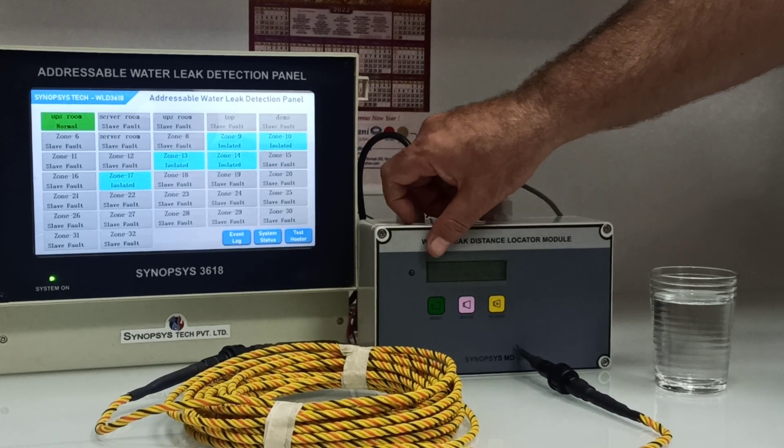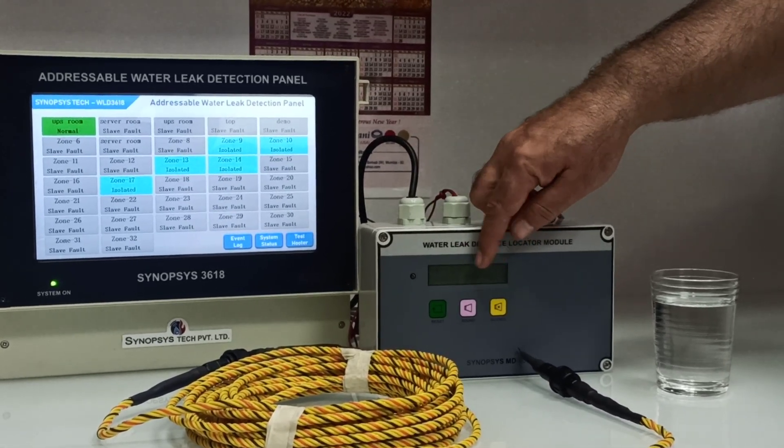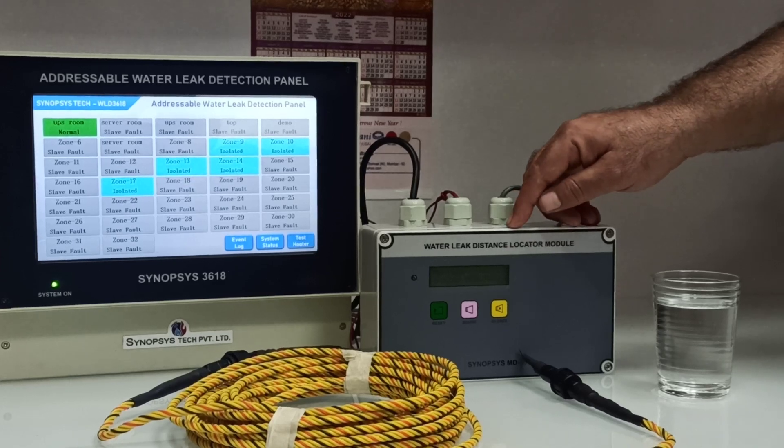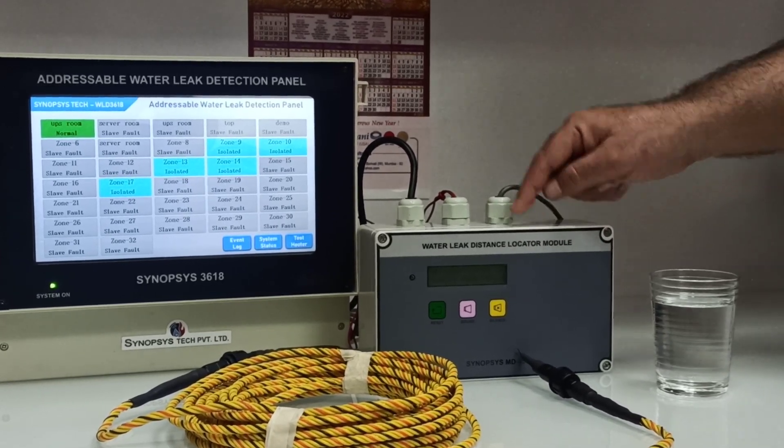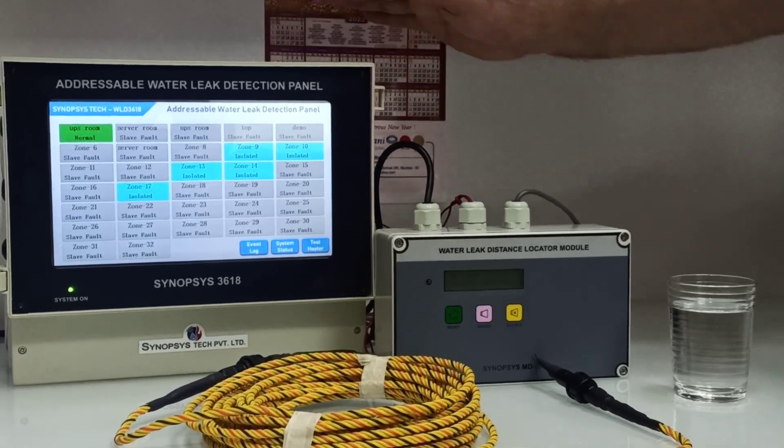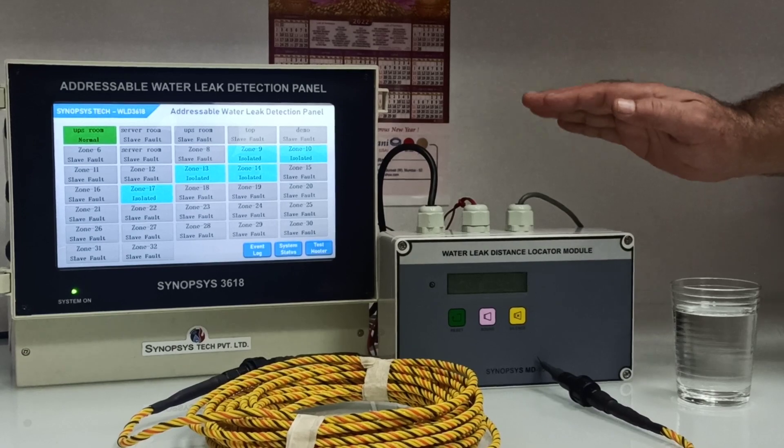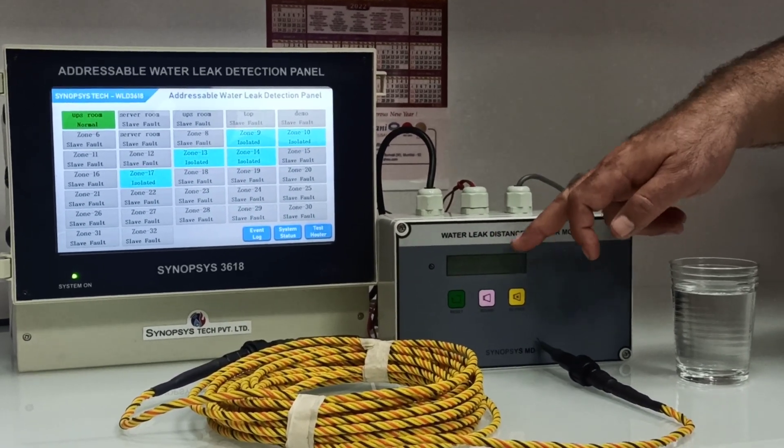The SIM module has an LCD display which shows leak at what distance. If there is a cable fault, then cable fault. It has a hooter output as well as a buzzer. Here also we have a hooter output as well as a buzzer. In this case we have a hooter as well as LCD display which shows the leak distance.